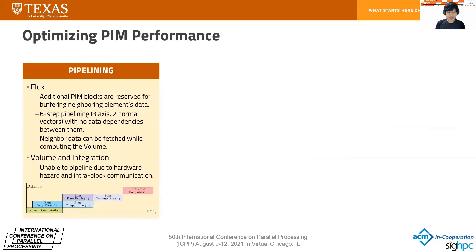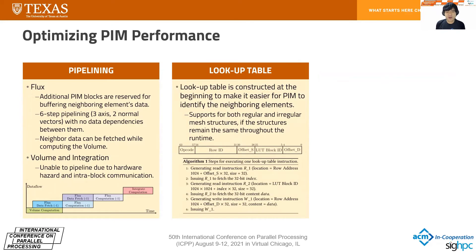To optimize PIM performance, we use pipelining. There are two types of pipelines that can be implemented for flux. We choose the second one, which overlaps volume computation with data fetching from neighbors for the next flux computation. For volume and integration, because of hardware hazards due to interblock communication, it is impossible to construct a pipeline for both. The second optimization is a lookup table. In software, we used pointer data structures to determine which elements are neighbors. In PIM, we construct a lookup table to make it easier to identify neighboring elements. It supports both regular and irregular mesh structures, as long as the structure remains the same throughout the simulation. The lookup table is constructed only once at the beginning.